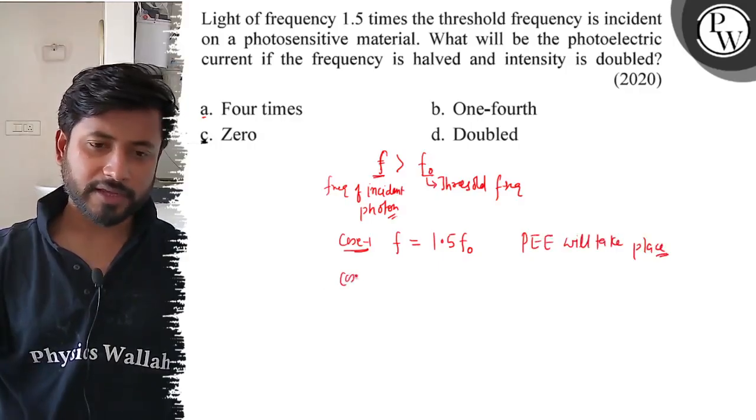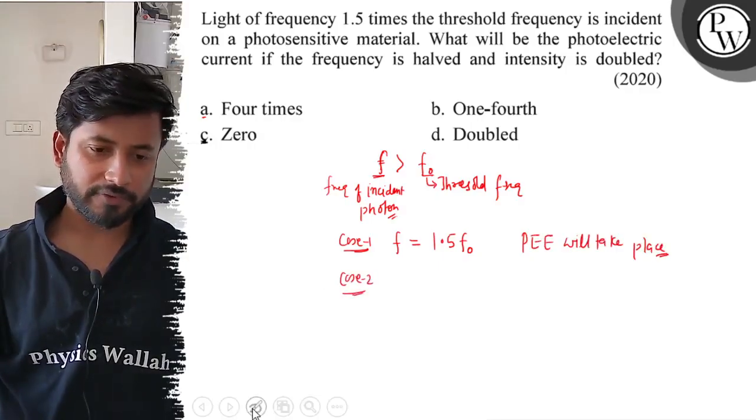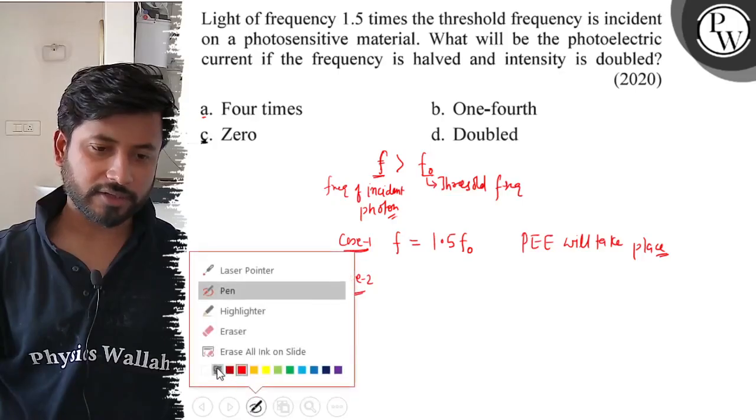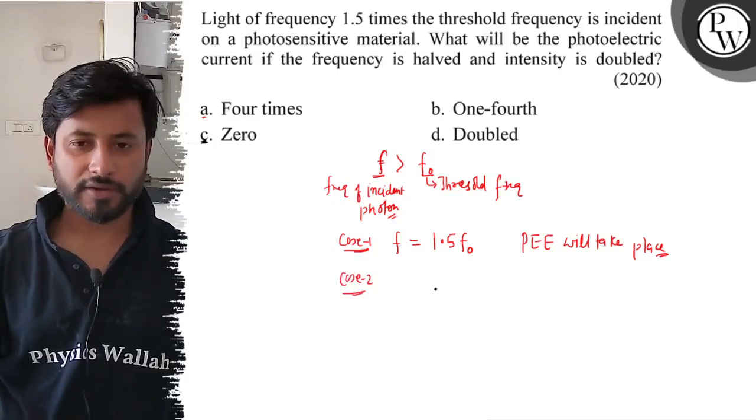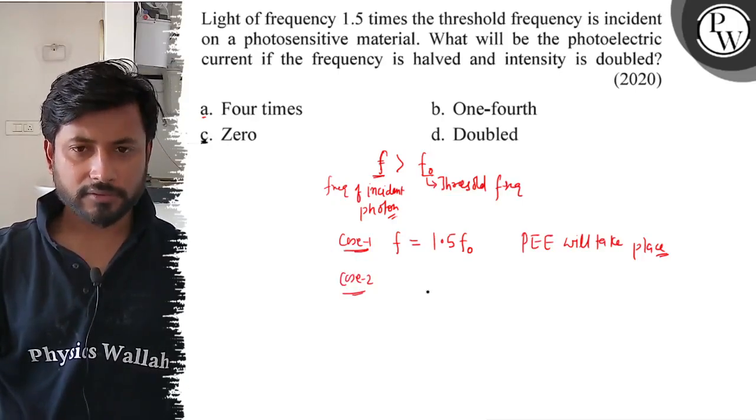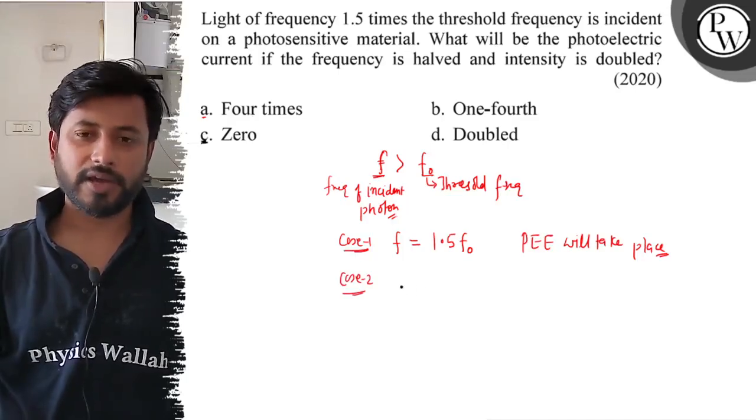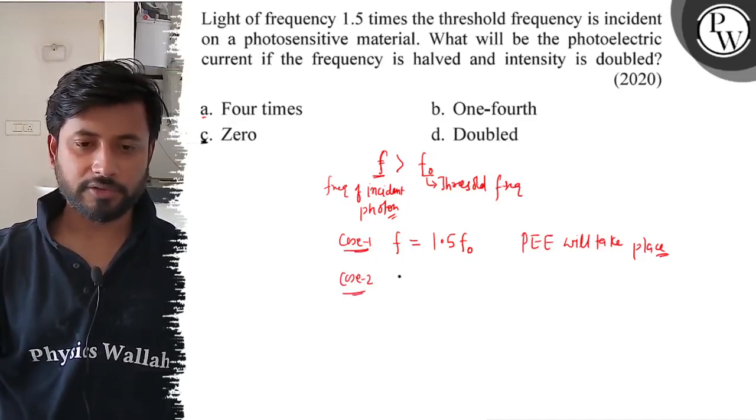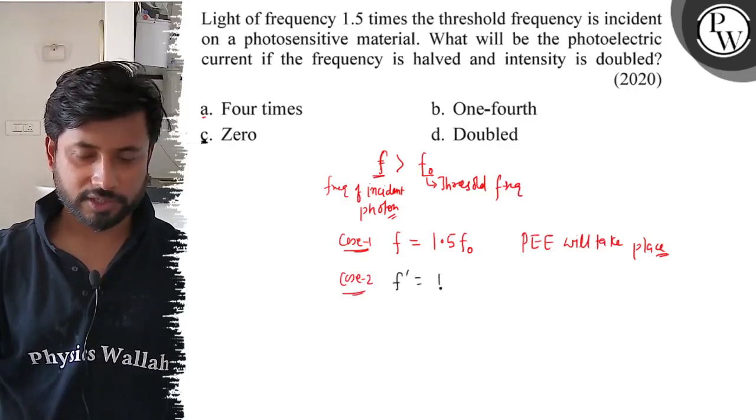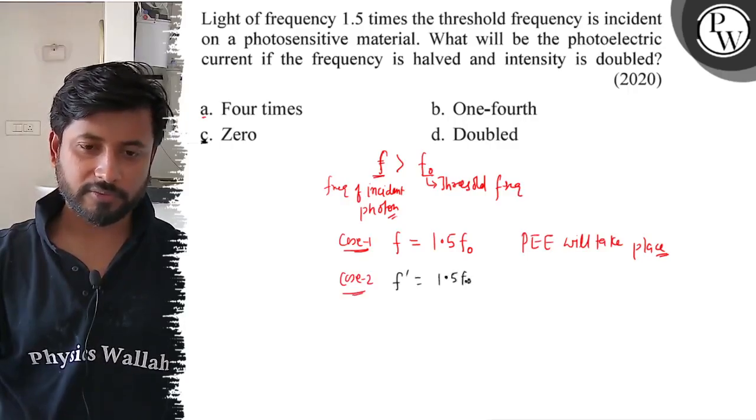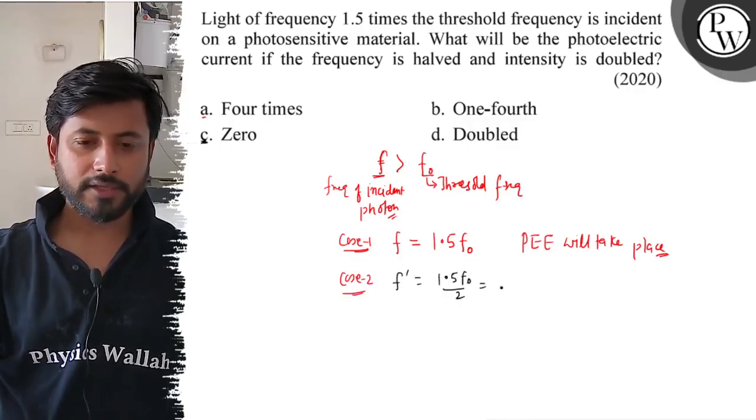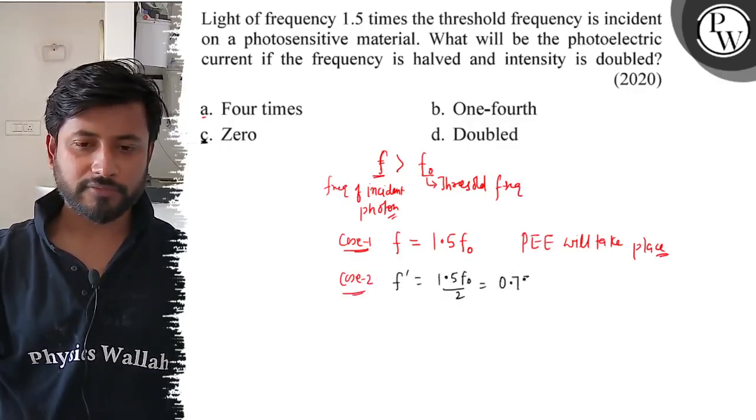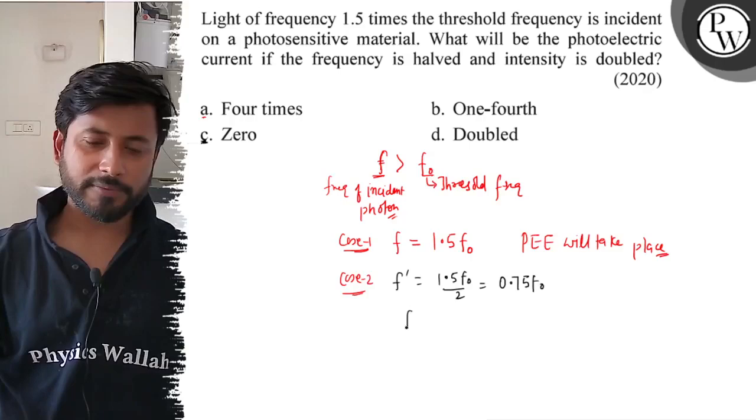Second case, the frequency is halved. The frequency is halved. So the new frequency is half of 1.5 f₀, which is 0.75 f₀.